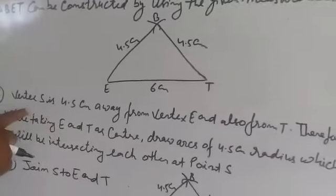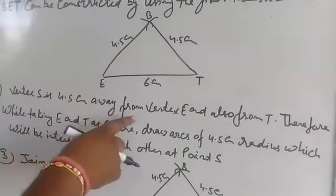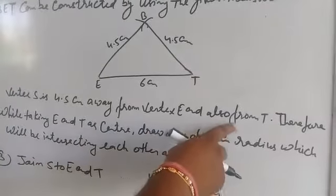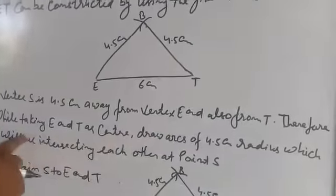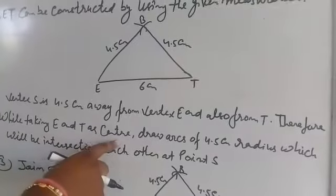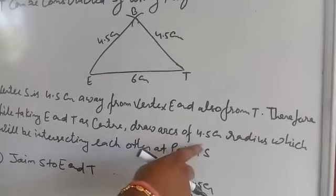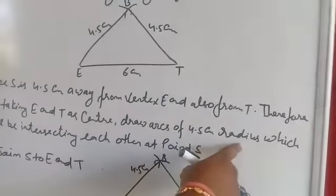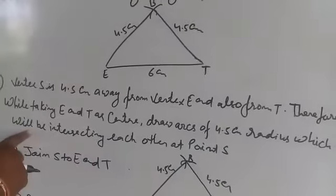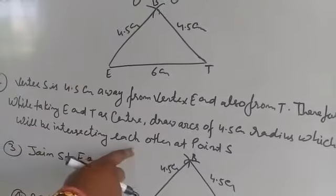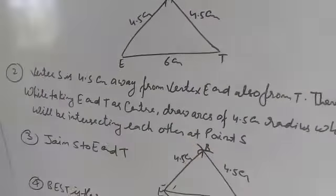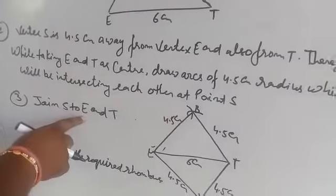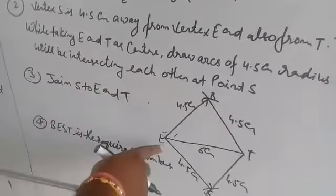Second, Vertex S is 4.5 cm away from both E and T. Taking E and T as centers, draw arcs of 4.5 cm radius which intersect at point S. Third, join S to E and T.